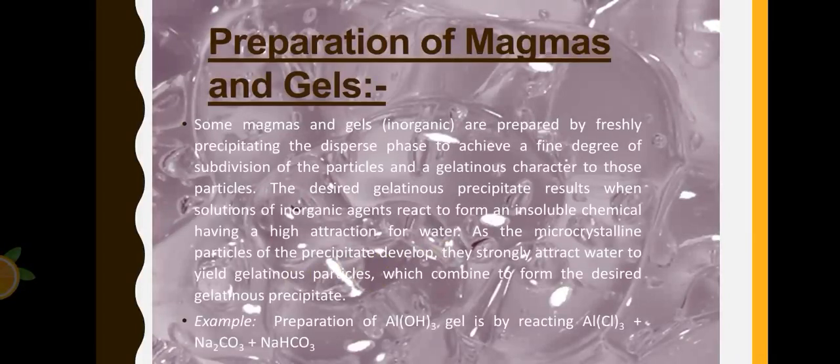Now the magmas and gels should be freshly prepared by freshly precipitating the dispersed phase to achieve a fine degree of subdivision of particles and a gelatinous character to those particles. The gelatinous precipitate is formed when the solutions of inorganic agents react to form an insoluble chemical having high attraction for water. The microcrystalline particles of the precipitate develop, they strongly attract the water, and as a result we get a gelatinous precipitate. For example, preparation of aluminum hydroxide gel is when we react aluminum chloride with sodium carbonate and sodium bicarbonate.